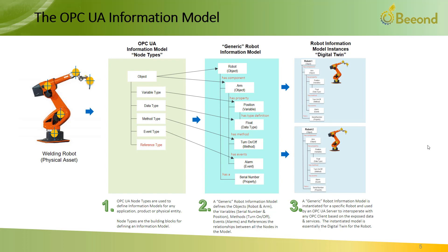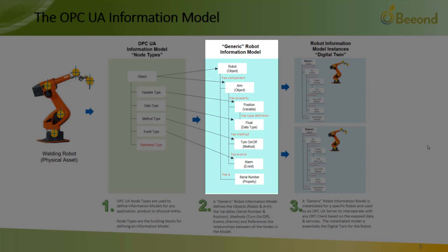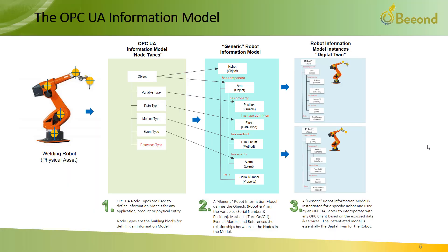OPC UA has defined standard information model building blocks referred to as node types. Node types such as object, variable, data type, method, event, and reference are used to build a model. Our example shows a robot model consisting of an ARM object that has a property, position, that has a method — turn on, off, and so on. Another important distinction is the reference node type, which is used to define a relationship between the nodes in a model.